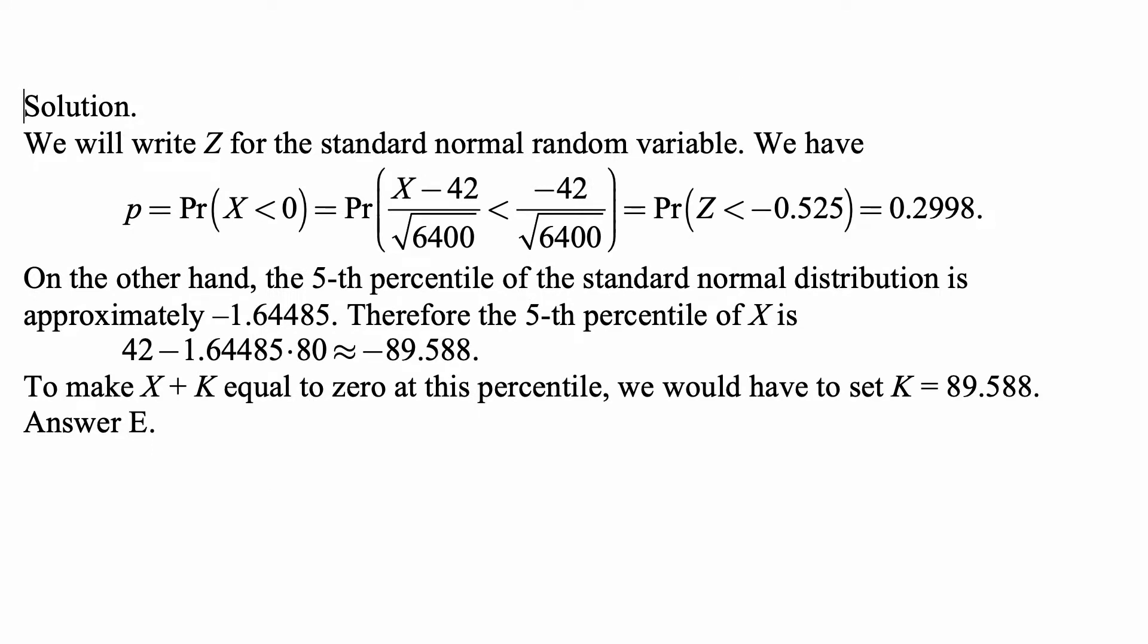Here is the solution. Let us write Z for the standard normal random variable. We have P, which is the probability that X is less than zero, equal to the probability of X minus 42, that's the mean of X, divided by square root of 6400.